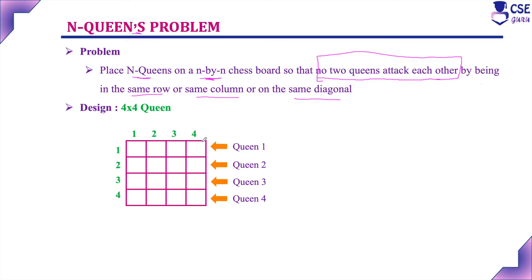Here, consider a four-into-four queens problem. There are four rows and four columns. Each queen should be placed in one row, so four queens should be placed in four rows such that no queen shares the same row, same column, or same diagonal with another queen. That is the constraint.